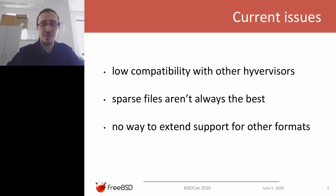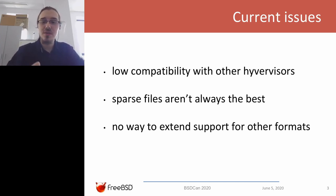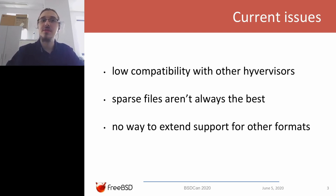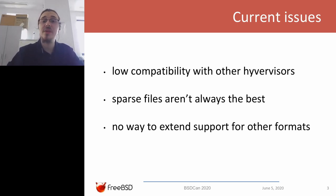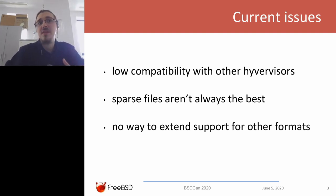The current issues with using raw disks is that most other hypervisors don't actually use raw disks. These hypervisors use specific implementations — for example, QEMU/KVM uses QCOW2, VirtualBox uses their own format, VMware uses VMDK. And if somebody wants to transfer their VM from that hypervisor to Bhyve, they won't be able to because we do not recognize those files.